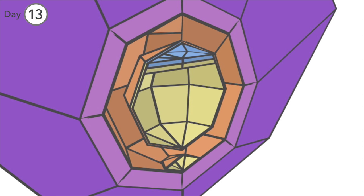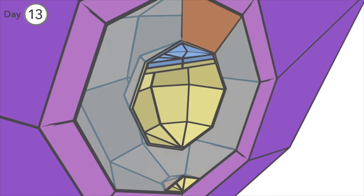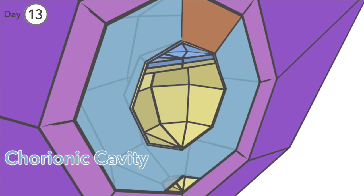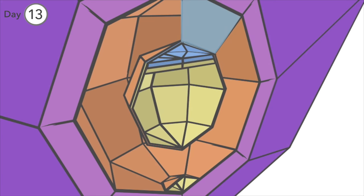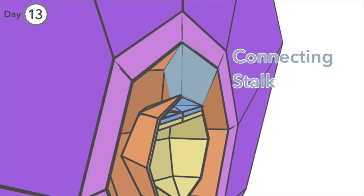Day 13. The space known as the extraembryonic coelum has expanded and is now known as the chorionic cavity. The extraembryonic mesoderm linking the cytotrophoblast to the embryo is known as the connecting stalk, which will eventually become the umbilical cord.